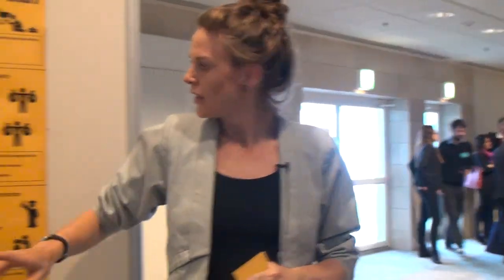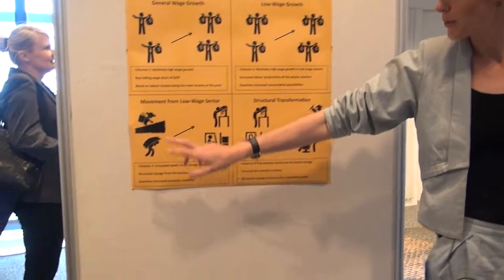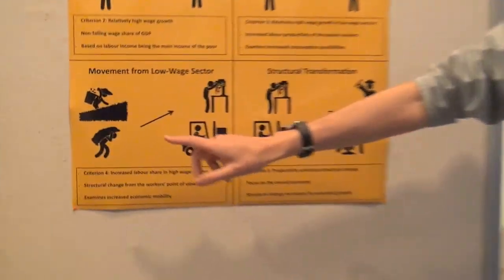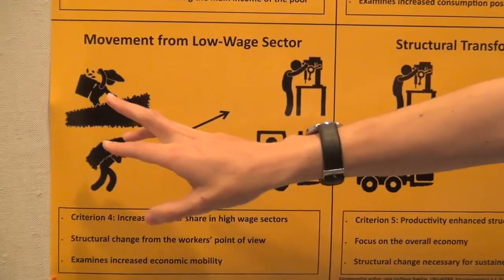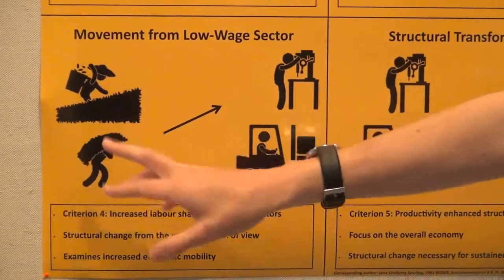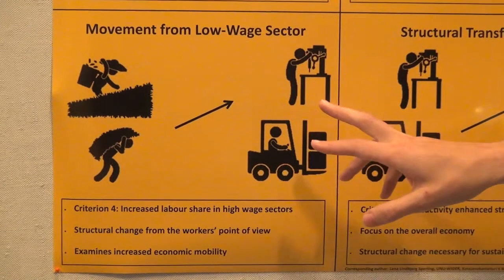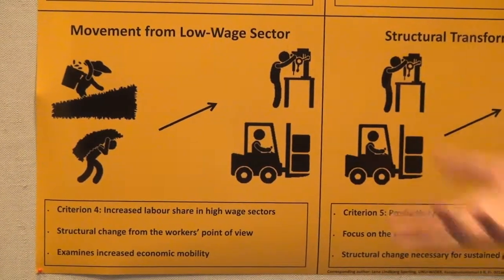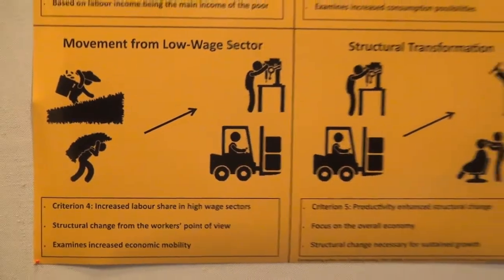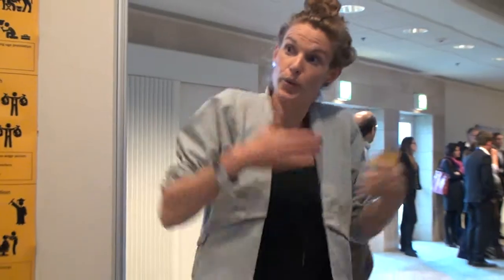Another strategy to reduce poverty is structural transformation, which is what we look at in criterion 4, where we say people should be moving from low-wage sectors into higher-wage sectors. This is structural transformation looked at from the worker's point of view, saying that workers should be the ones benefiting from structural transformation.